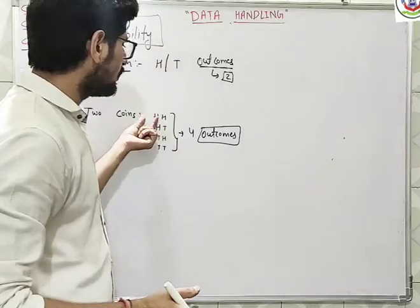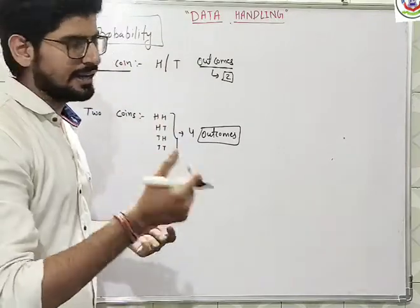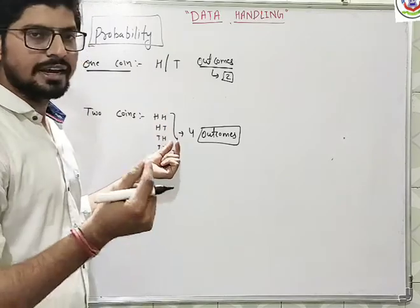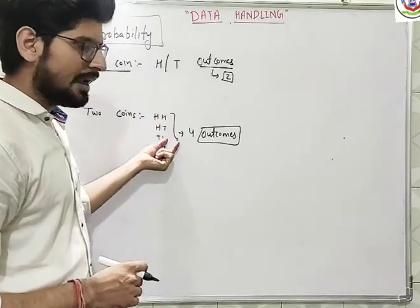That means if you toss two coins, first can be head and next can be head, first can be head and second can be tail, first can be tail and second can be head.